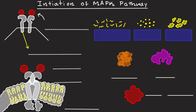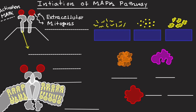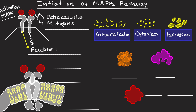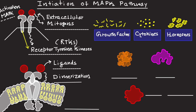Initiation of the MAP Kinase Pathway by mitogen stimulation. The activation of the MAP Kinase Pathway begins with the binding of extracellular mitogens — small molecules that have the ability to activate the MAP Kinase Pathway, such as growth factors, cytokines, and hormones. These molecules have a specific ability to bind with receptors known as receptor tyrosine kinases, or RTKs, which are present on the cell membrane. These mitogens are also known as ligands, and they can induce dimerization as well as autophosphorylation of the RTKs.